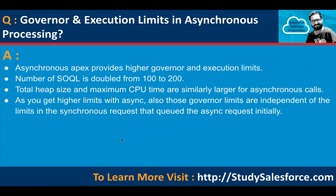Governor and Execution Limits in Asynchronous Processing: Asynchronous Apex provides higher governor and execution limits. The number of SOQL queries is doubled from 100 to 200. Total heap size and maximum CPU time are similarly larger for asynchronous calls. Also, those governor limits are independent of the limits in the synchronous requests that initially queued the async request.